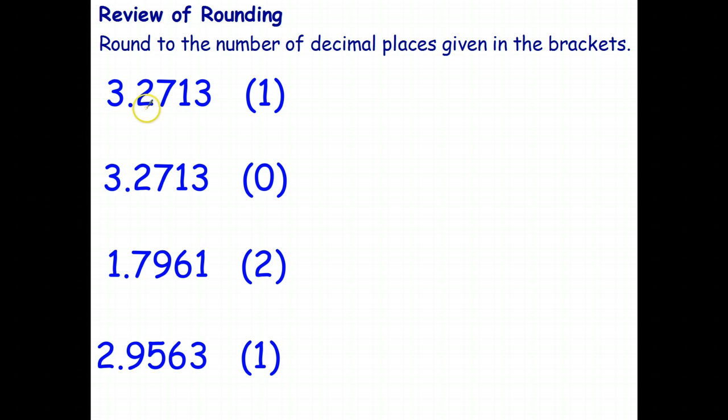So first off, one decimal place is the 2 so I underline that. I then circle the number behind it if there is one, which there should be, and then I cross out all the others. Doesn't matter what those are, they're not going to affect the answer.